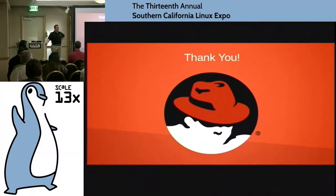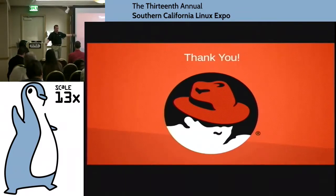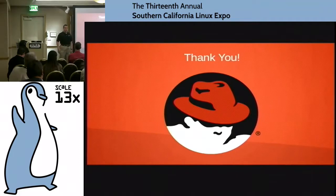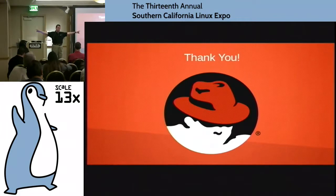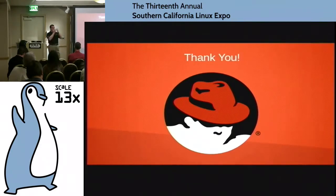Gluster is really the closest thing to magic that we sell. It is silly easy to set up. You saw me do that, taking time to talk about every single step. When I've got a big enough screen to do it live with all four terminals going, I can do the entire demo in about 15 minutes. This is the easiest product that we have, and it's fast. When you start distributing stuff over 10 or 12 servers, you've got the ability to do multiple streams at the same time — it's a thing of beauty.